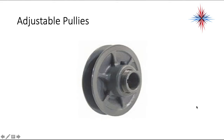Adjustable pulleys have a belt in the grooves and a hex nut that you loosen to open or close the pulley. If you open it up, it makes the belt looser and the blower wheel will slow down. If you tighten it up, the belt will be tighter and the blower wheel will speed up.